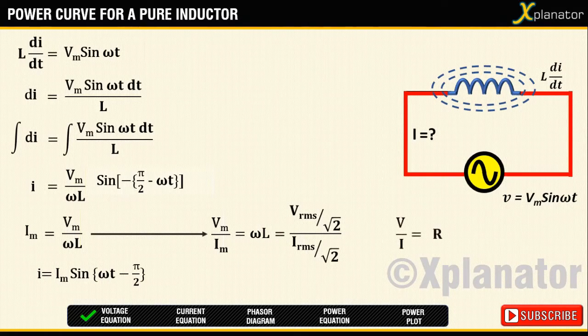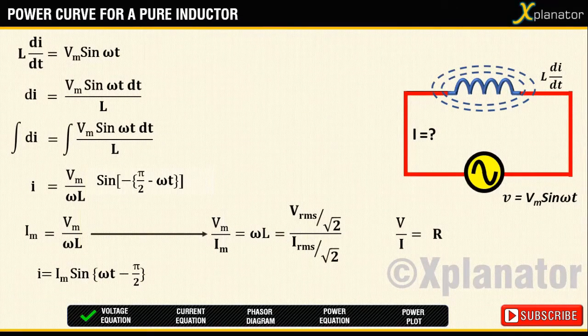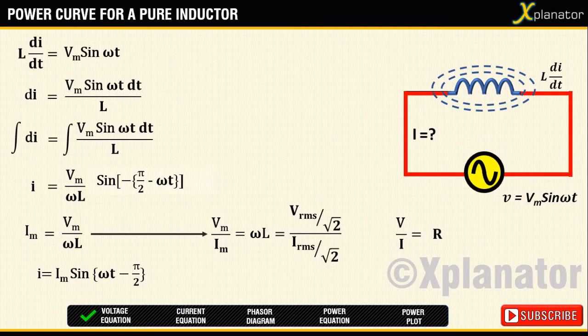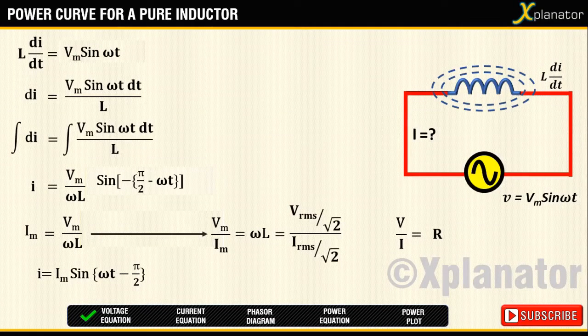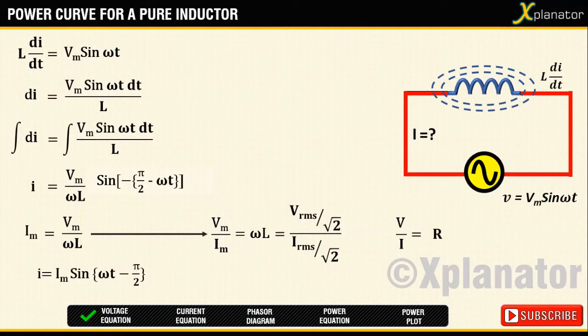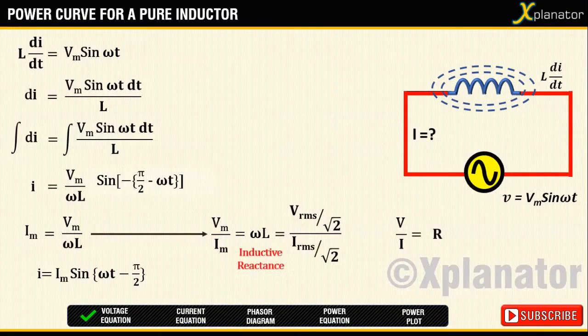Comparing it with the equation for Ohm's law, you see that R equals ωL. Which means, ωL is the opposition offered to the flow of AC current in the inductive circuit. So we call the term ωL as inductive reactance.